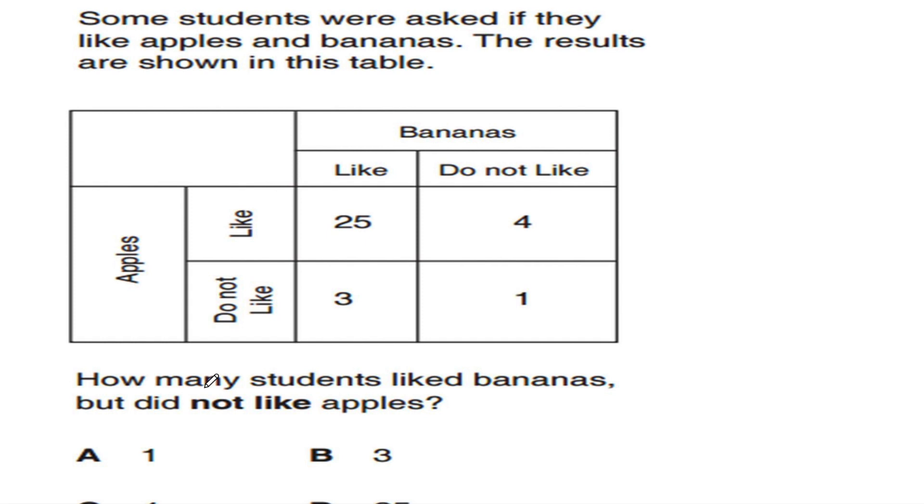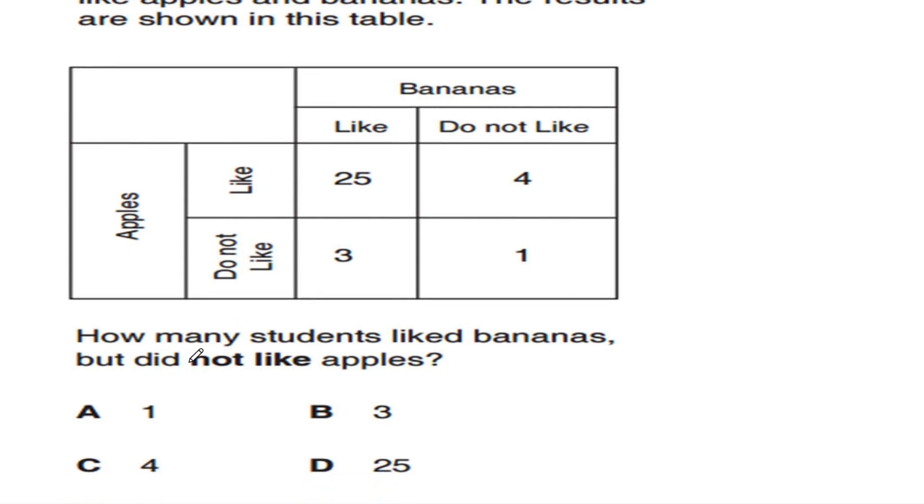Some students were asked if they like apples and bananas. The results are shown in this table. How many students like bananas but did not like apples? Over here, 25 students and 3 students like bananas. That means 28 students like bananas and 5 students do not like bananas. For apples, 29 students like apples and 4 students do not like apples. So basically 3 is the answer because they like bananas but they do not like apples.